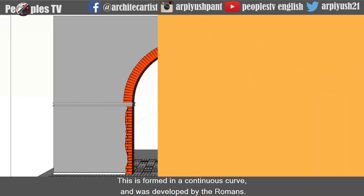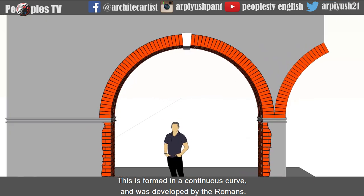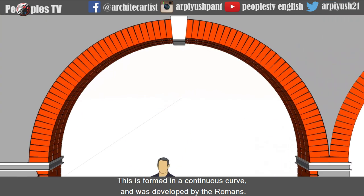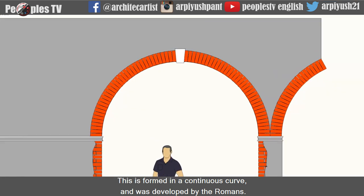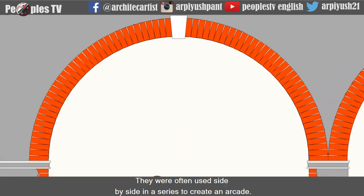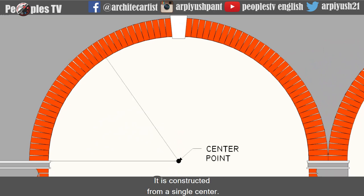The round arch is formed in a continuous curve and was developed by the Romans. They were often used side by side in cities to create an arcade, and it is constructed from a single center.